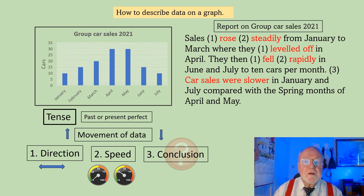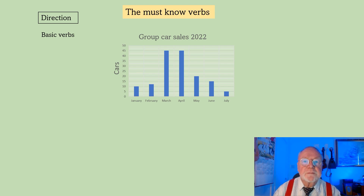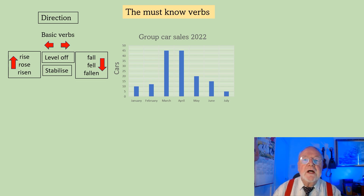Let's look first at the verbs which talk about direction. Here are the very basic verbs which would let you talk about any of our graphs. Rise, rose, risen for an upward trend. Level off and stabilize for something that doesn't move at all. And fall, fell, fallen for downward trends.